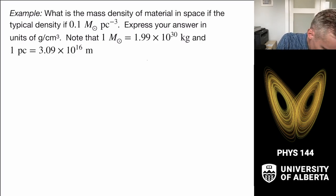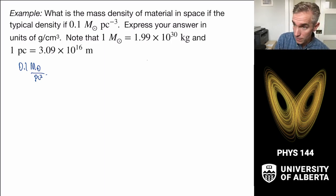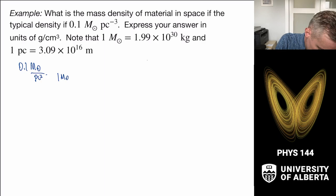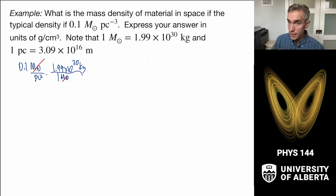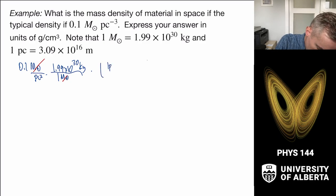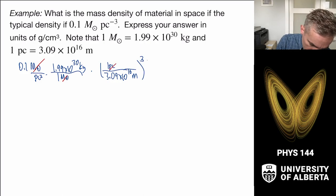I start with 0.1 solar masses per parsec cubed, and I want to multiply by the conversion factor for mass to get rid of that solar mass. So I want 1 solar mass in the denominator and 1.99 × 10³⁰ kilograms in the numerator. That cancels out my solar masses. Next I'll try to get rid of that parsec cubed.